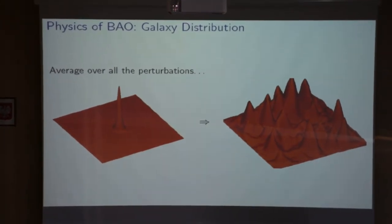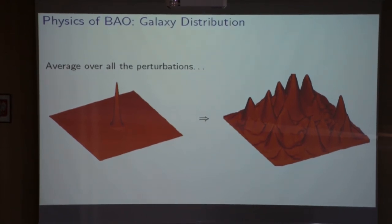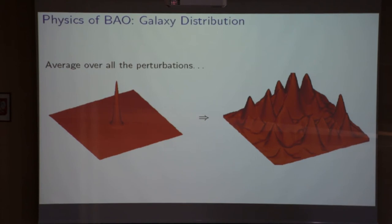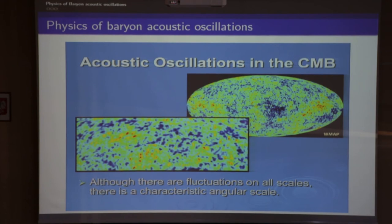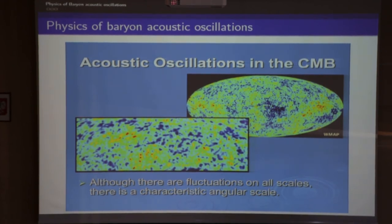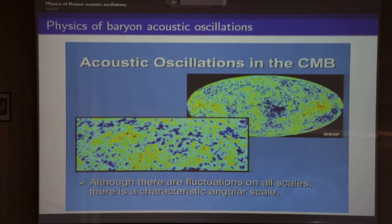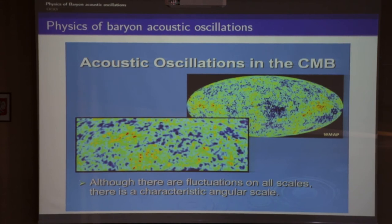The acoustic peaks in the galaxy distribution could also be called Sakharov peaks. Although there are fluctuations on all scales, there are characteristic angular scales. The CMB shows these as peaks in the Cl spectrum, with much larger amplitudes than what we see in the galaxy distribution, because the CMB is dominated by radiation. The funny thing about baryonic acoustic oscillations is that the same physics is visible in the CMB 13.7 billion years ago and in the galaxy distribution at different redshifts, whenever we map the latter in sufficient detail.